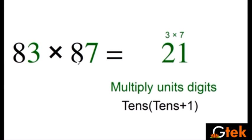My tenth place is 8 and 8. So 8 into 8 plus 1 is 9, that is 72, 21.